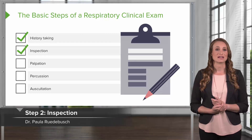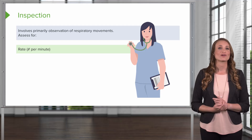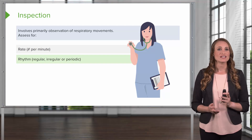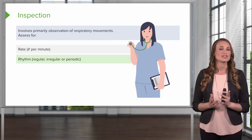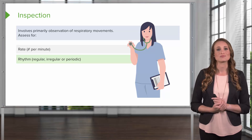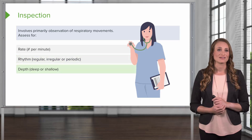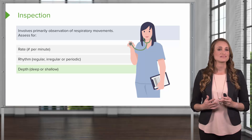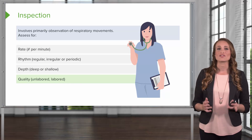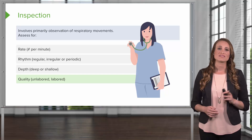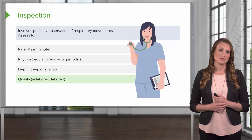Next, we'll move on to the inspection category. This involves a primary observation of your patient's respiratory movements. You're going to assess for the respiratory rate. For infants, you're going to count for one full minute, because the respiratory rhythm or tempo can vary significantly. In older children and adults, you can do 30 seconds and multiply by 2. You'll assess the respiratory rhythm — is it regular, irregular, or periodic? You're going to look at the depth of respirations: is your patient breathing deeply, or do they have shallow breathing? What is the quality — are they working to breathe, or are they calm? If it's unlabored, that's normal. If it's labored, that means they have increased respiratory effort.